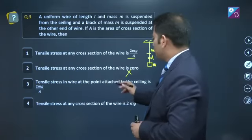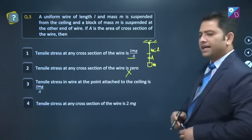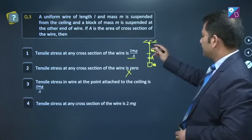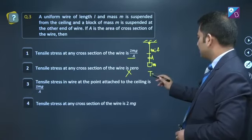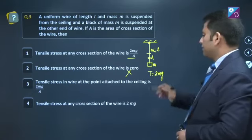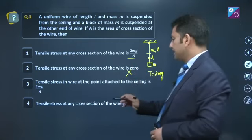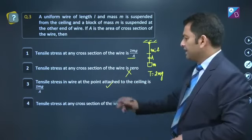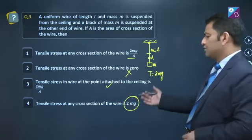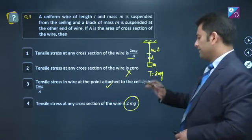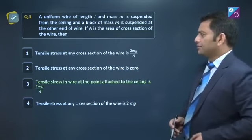Tensile stress in the wire at the point attached to the ceiling - if we look at the free body diagram, what would be the tension at this top end? Of course, the entire weight below, so tension there will be 2mg. And stress is tension per unit area, so 2mg divided by area, meaning option number 3 is correct. Tensile stress at any cross section is 2mg - no, that's force, not stress. This is true - the force is 2mg, but stress has to be divided by area. So option number 3.